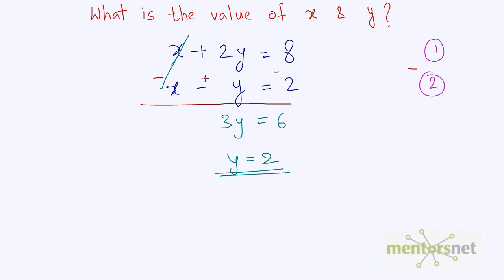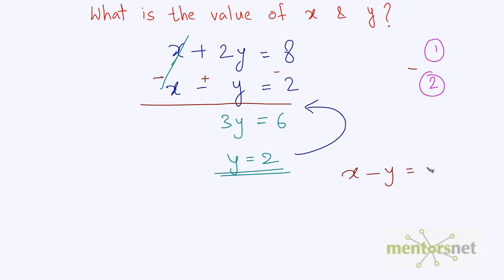Now you have got the value of y. To find out the value of x you have to put this value of y into any one of these equations. So put the value of y in equation 2: x minus y is equal to 2. The value of y is 2, so x minus 2 is equal to 2. Therefore the value of x is equal to 4.